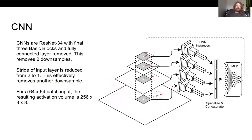Our CNN is a ResNet 34 pre-trained on ImageNet. It's got the final three basic blocks removed as well as the fully connected layer, which removes a couple of downsamples. We also reduce the stride of the input layer, which effectively removes another downsample. So for a 64 by 64 patch input now, the resulting activation is a 256 by 8 by 8 volume. There's four instances of the CNN in this figure - they all share weights, so it's really just showing we're processing each patch in the column with the same CNN simultaneously via vectorization.